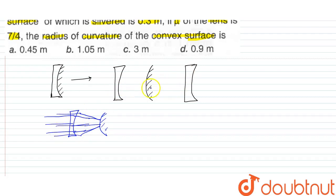So this system acts as a plano-convex lens combined with a convex mirror.